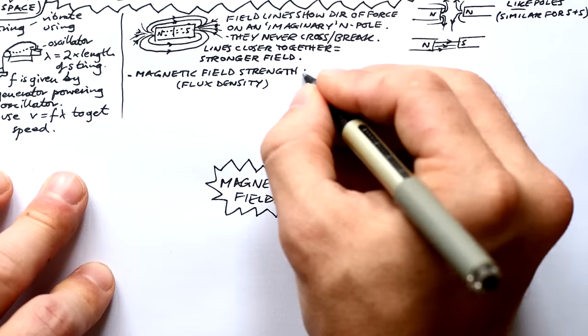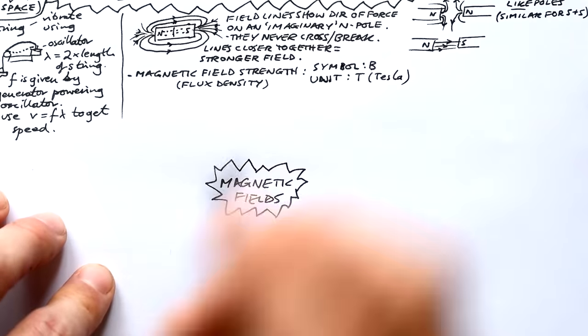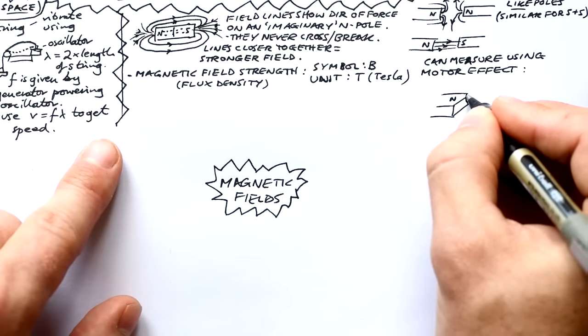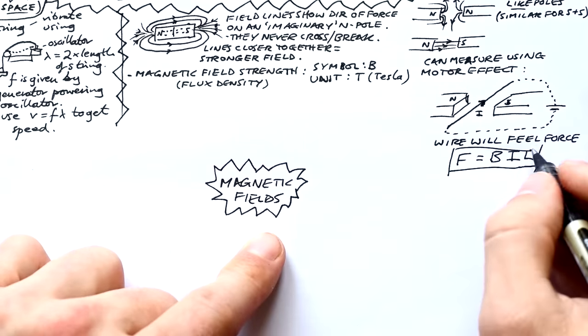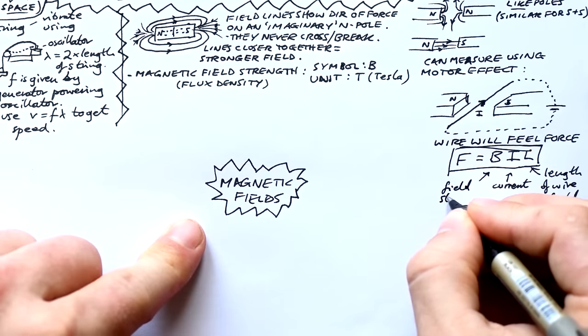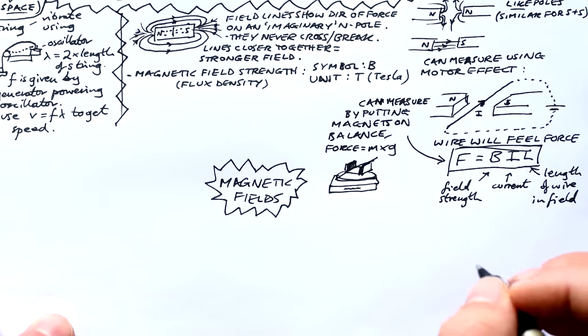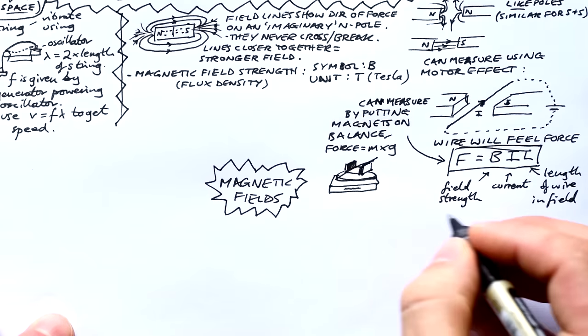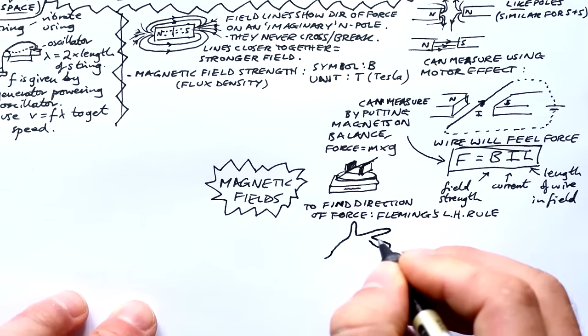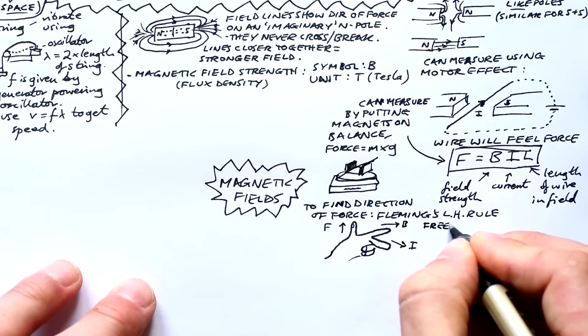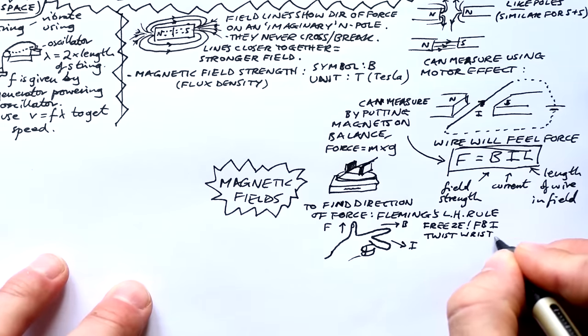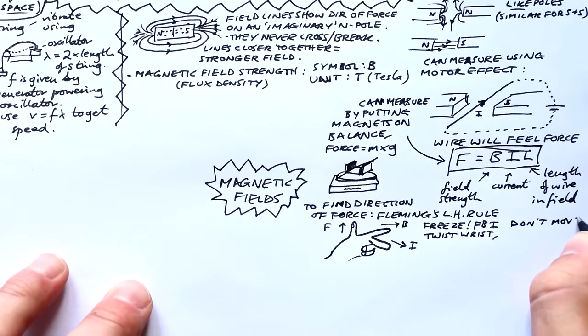Magnetic field strength, or its proper name, magnetic flux density, is given the symbol capital B, and the unit is capital T for Tesla. We can measure the strength of a field using the motor effect. That is, a wire with a current flowing through it will experience a force if it's in a magnetic field. The equation for this is F equals BIL. Force equals field strength times current times length of wire in the field. We can measure the force by having the magnets resting on a top pan balance. When we turn the circuit on, we'll see a change in mass. If we times that by g, then that gives us the force. However, if you want to find out the direction of the force, we need to use Fleming's left hand rule. Get your fingers like a gun. Thumb is force. First finger is field. Second finger is current. They're all at 90 degrees to each other. All you have to do is get your fingers like that. Don't move your fingers, but just twist your wrist to get them in line. In my diagram, my thumb ends up pointing down. The force on the wire is going to be down.